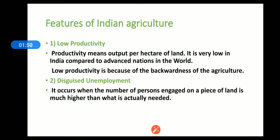Matlab yeh hua ki jaise kisi khet mein 5 labor ki zaroorat hai aur wahan 10 kaam kar rahe hain. Toh lagta hai ki 10 kaam kar rahe hain, lekin jo 5 hain unka marginal productivity zero hai, matlab unka contribution zero hai. Is type ka jo unemployment hota hai usko disguised unemployment bolte hain. Bahut saare log jo puri family ke saath agriculture mein kaam kar rahe hain, unka koi bhi contribution nahi hai. Yeh bhi Indian agriculture ka ek feature hai.